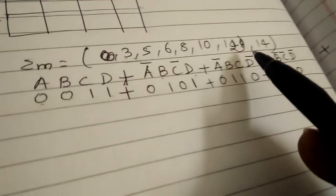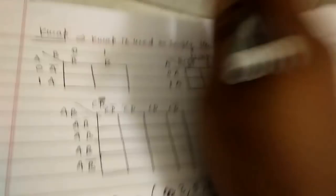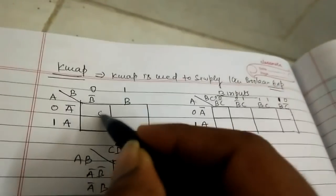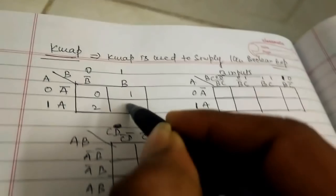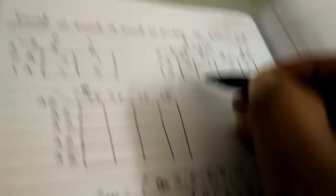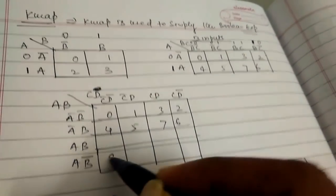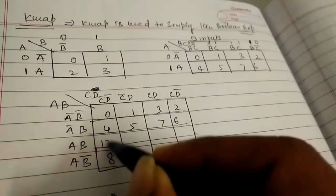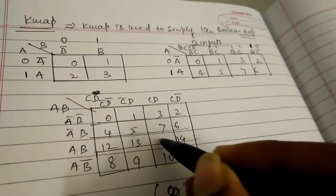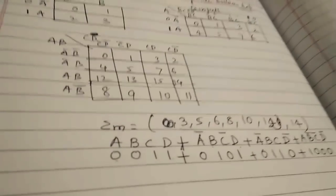For numbering the K-map cells: two inputs have cells 0 to 3; three inputs have cells 0 to 7; and four inputs have cells 0 to 15. This is the standard cell numbering for any K-map.